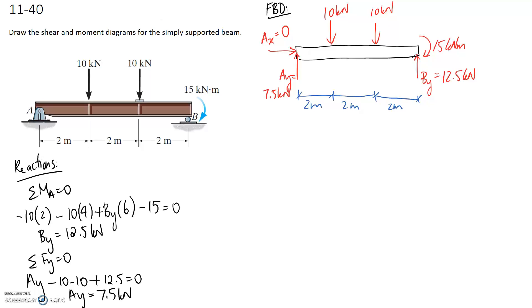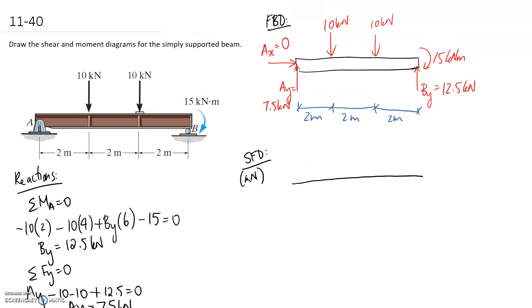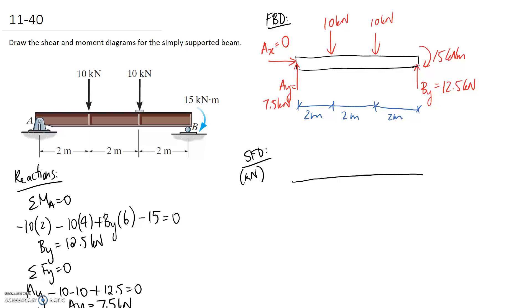Now we're at the point where we can start drawing the diagrams. For the graphical method we always want to start with the shear force diagram. Our units on it are going to be in kilonewtons. All we've got to do is try and follow the forces as we move along the beam. We know that these diagrams need to start and end at 0.